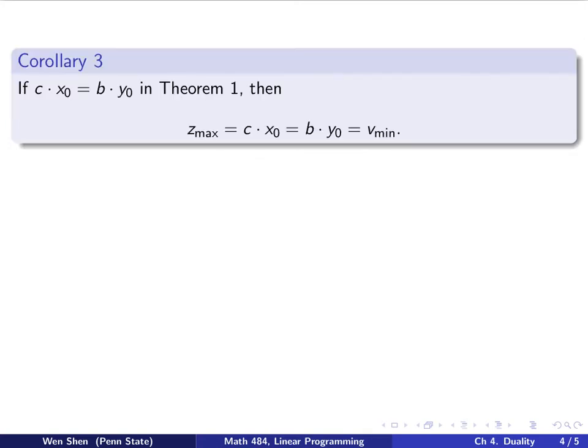This is a more interesting corollary, number 3. Considering the setting of theorem 1, if now I have c dot x0 equal b dot y0 in theorem 1, then I can conclude that z max exactly equals c dot x0, and v min will be b dot y0, and these two equal to each other.